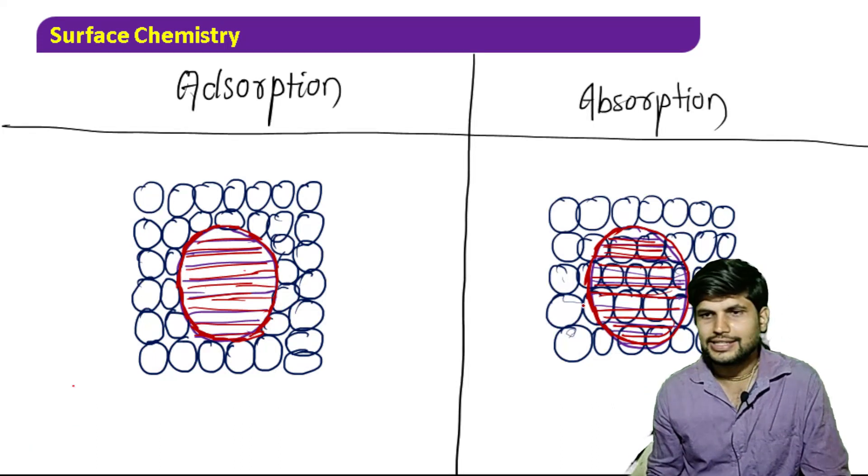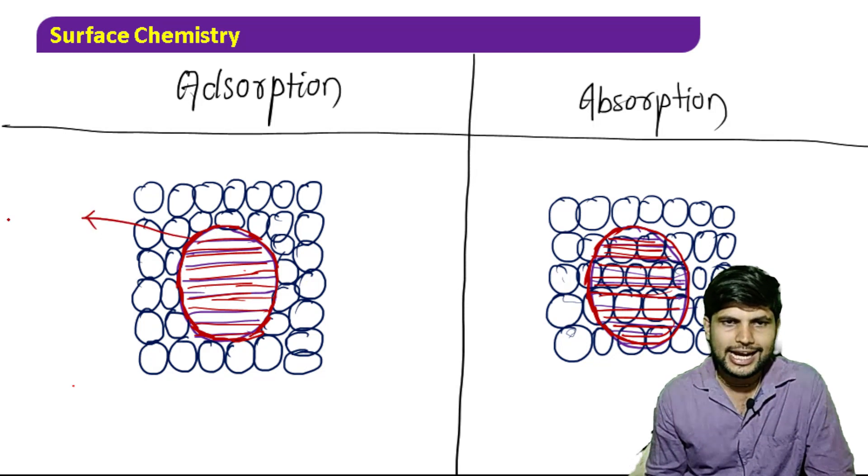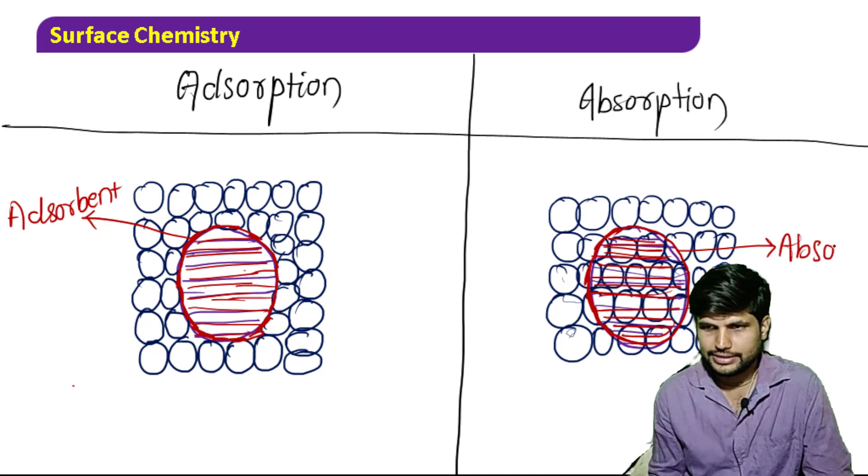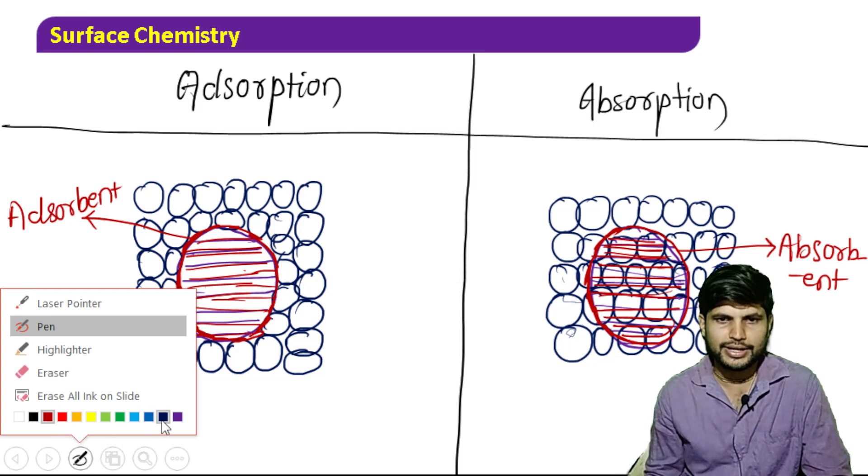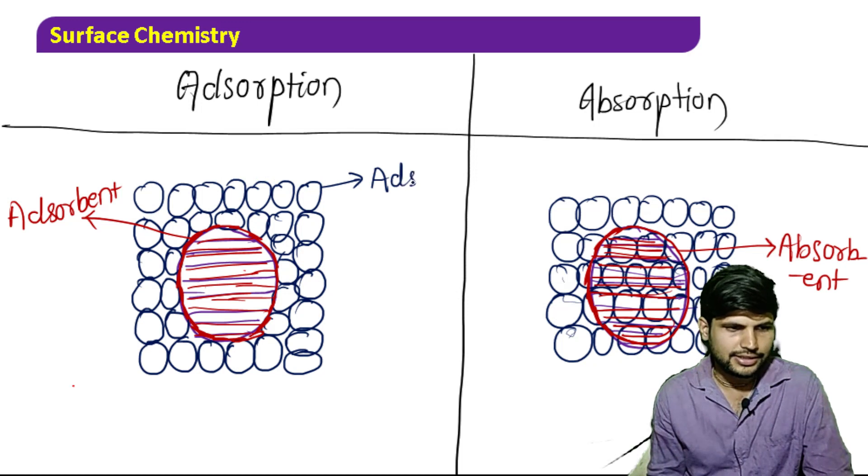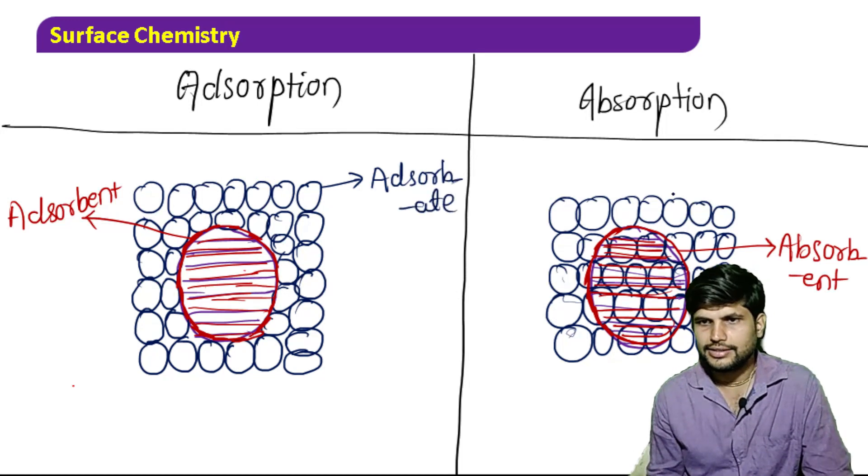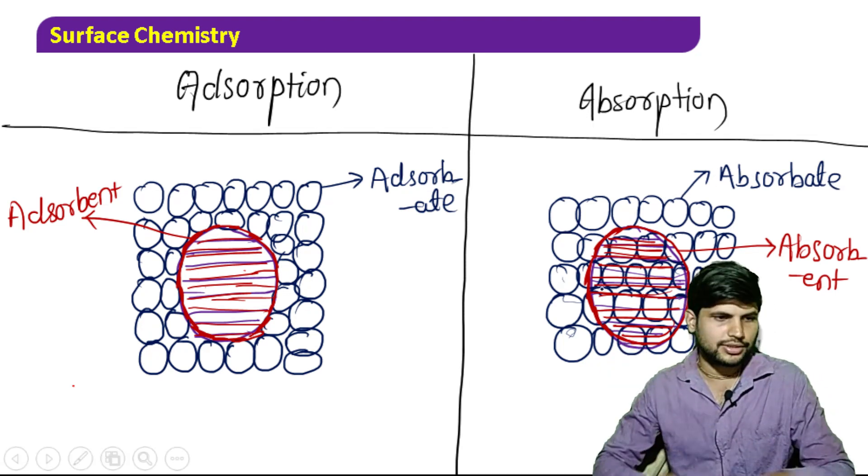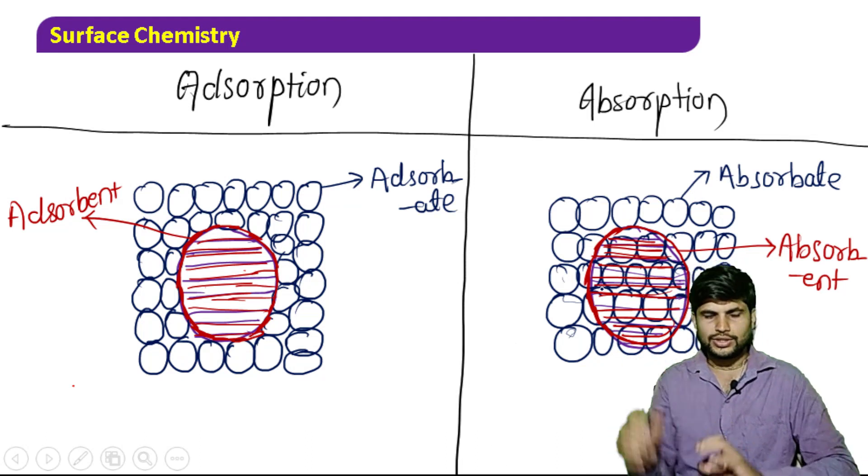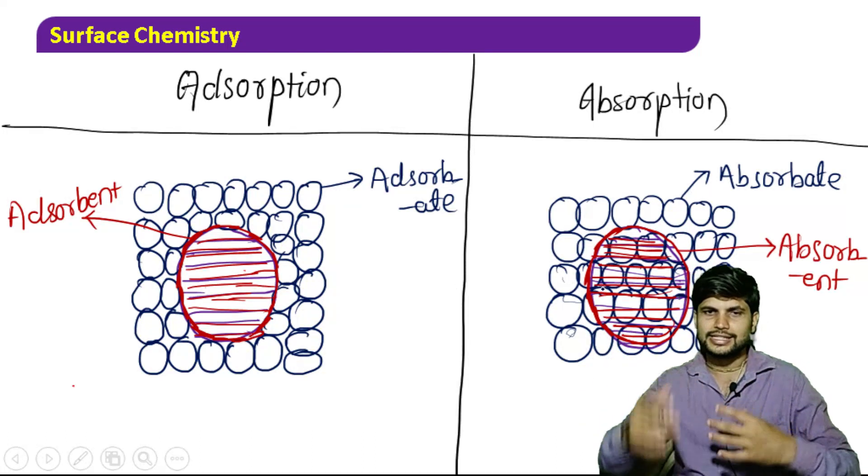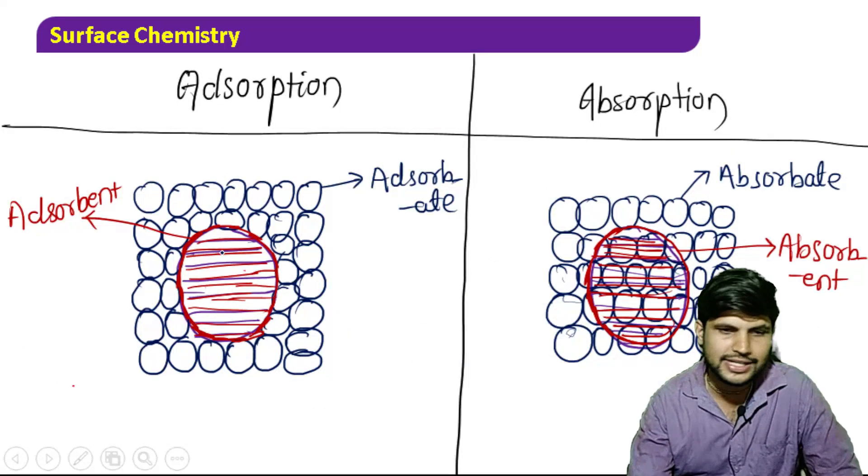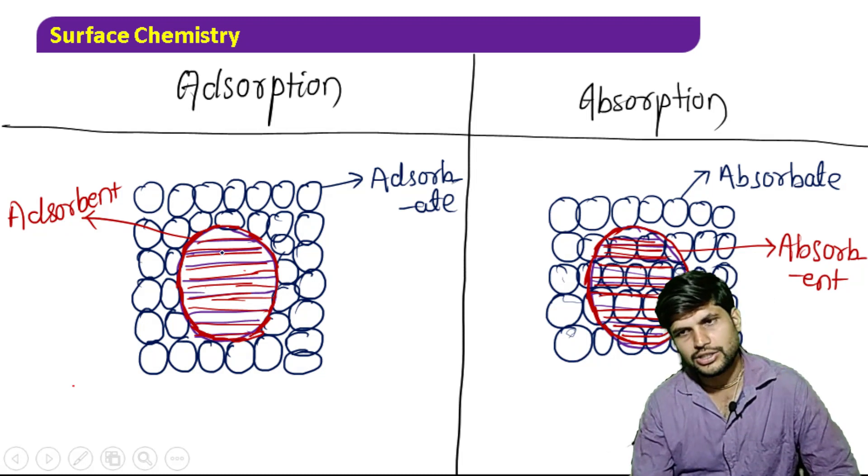So this is the figure of adsorption and this is the figure of absorption. This is the surface of adsorbent, and this is the adsorbate. You can see here that the adsorbate molecule gets adsorbed towards the surface, whereas in this case it goes into the adsorbent. Next class I am going to talk about the difference between physisorption and chemisorption. I hope you might have understood the concept well, thank you.